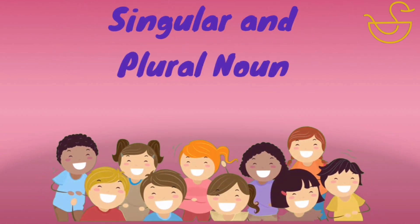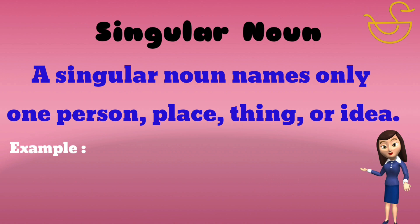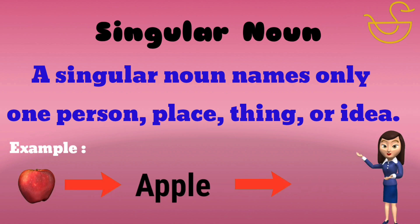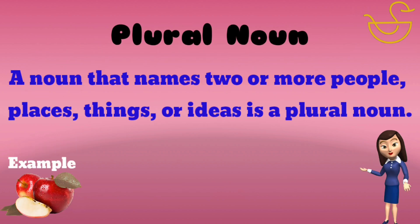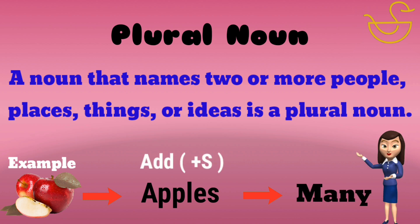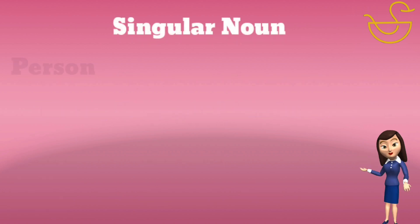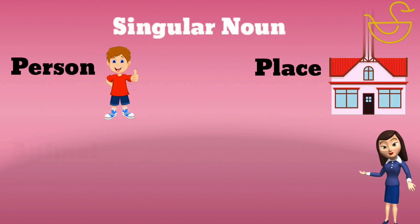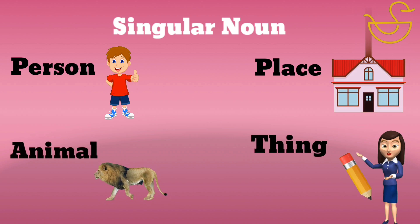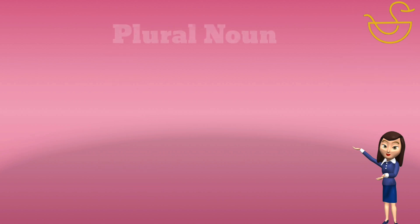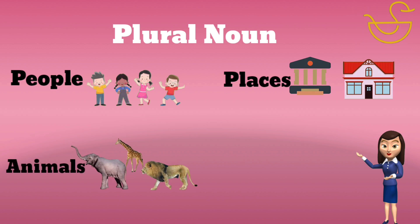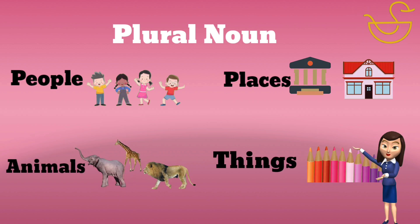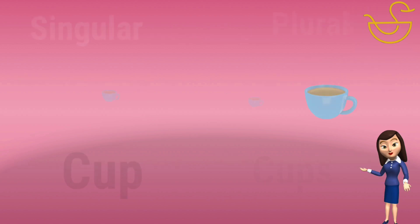Singular and Plural Nouns. A singular noun names only one person, place, animal, or thing. Example: Apple. A plural noun names two or more. To make it plural, we add 's' to the singular noun. Example: Apples. As you can see, singular is just one, while plural — People, Places, Animals, Things — refers to many.